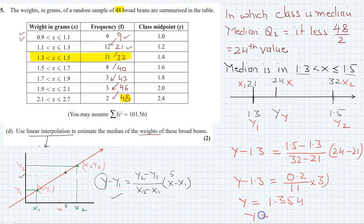So y is equal to this value plus this, so it is 1.354. So y is equal to 1.36 up to 3 significant figures. So that is how easy it is to get any value using linear interpolation.